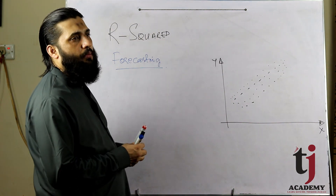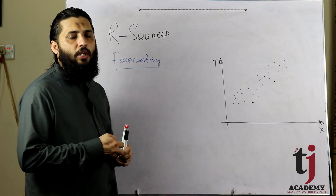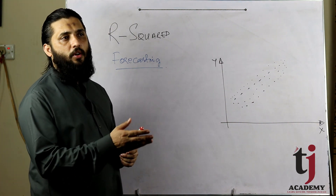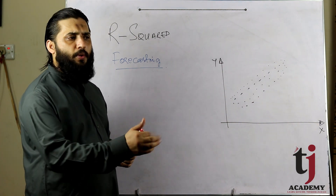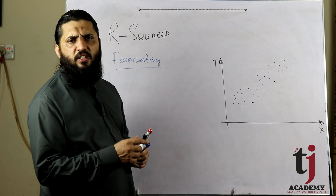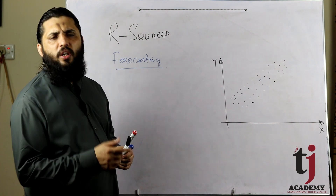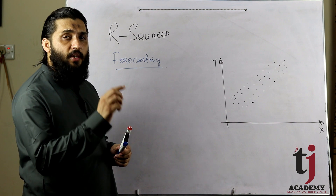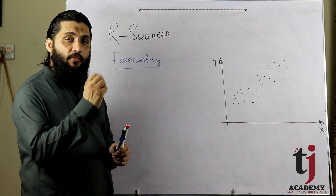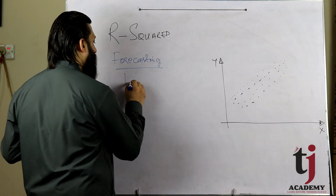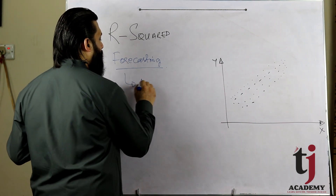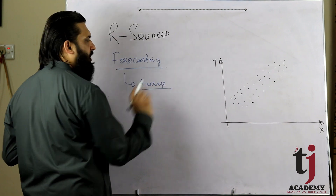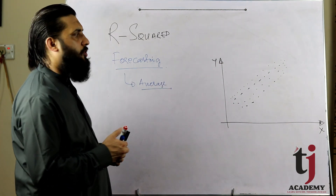Now if you need to forecast, the simplest method is to use the average. For example, if a student has a GPA of 2.8, 2.89, 2.85 over four semesters, and you need to guess the fifth semester, you would get approximately 1.8 or 2.88. This means you can use the average to forecast.